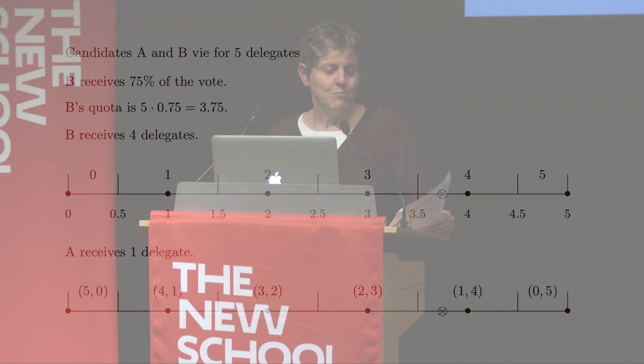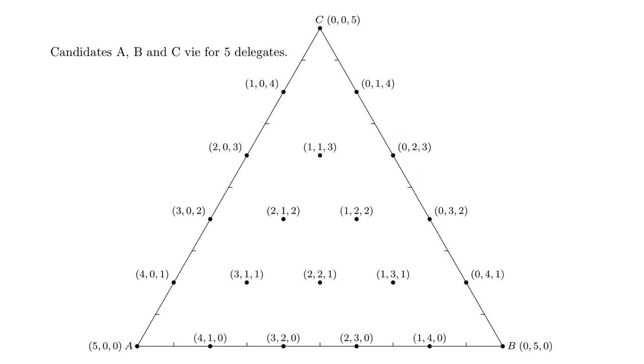Now, what if you have three candidates? Here's what it looks like. Points along the bottom are where C receives no votes and A and B split all the delegates. Points on the left side are where B receives no votes and A and C receive all the delegates. You get the idea.